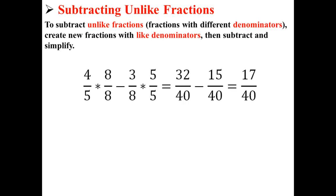So 32 over 40 minus 15 over 40 is equal to 17 over 40.